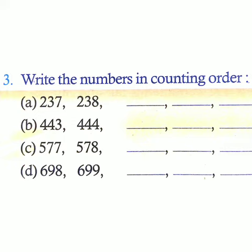Question number three. Write the numbers in counting order. Counting order means what? You should write number one after the other. First one 237 and 238, you should write the next number.